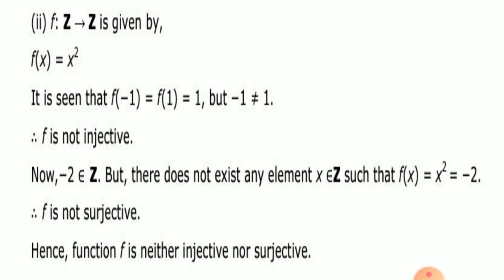Next, f from Z to Z given by f(x) = x². Let f(−1) = (−1)² = 1 and f(1) = 1. So x₁ = −1 and x₂ = 1, but −1 ≠ 1, yet f(−1) = f(1) = 1. Therefore f is not injective. Also, −2 belongs to Z, but there does not exist any element x in Z such that f(x) = x² = −2, since x² is always positive. Therefore f is not surjective. So f is neither injective nor surjective.